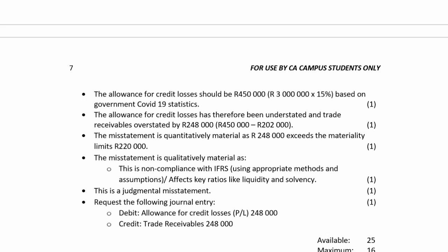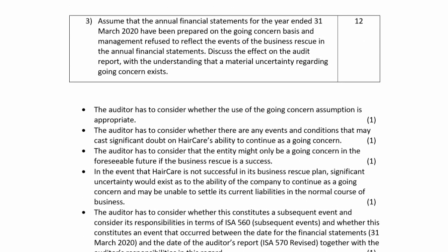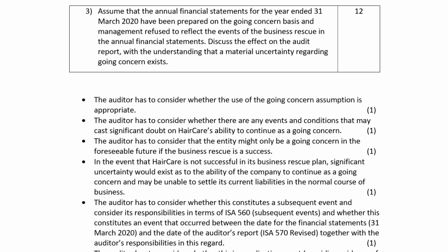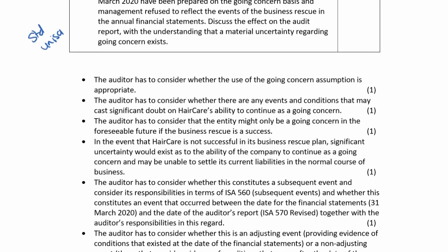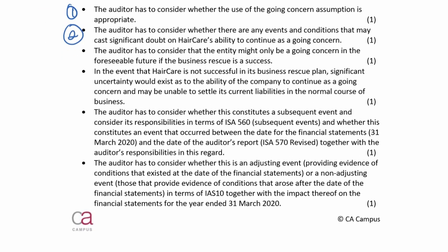For this type of question, use the standard solution structure. The first two marks are always there — those theory marks straight out of the standard: is the going concern assumption appropriate, and is there material uncertainty? That's what we're trying to figure out. Another thing that's always there is the discussion that if they don't take on the business rescue, they might not be a going concern.